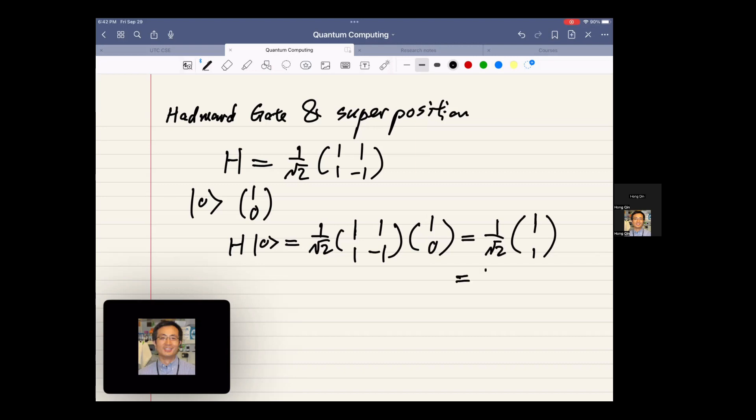This can be rewritten as two base states. So the final state is the combination of base state ket 0 and ket 1.